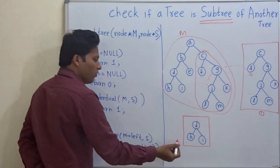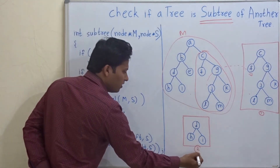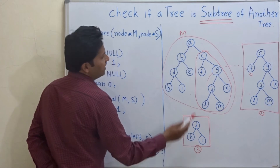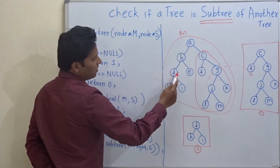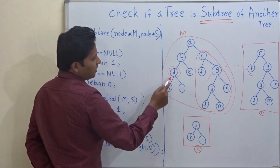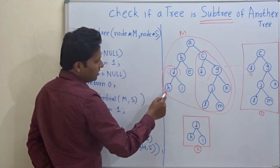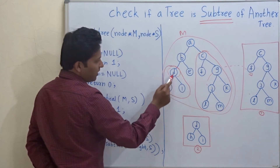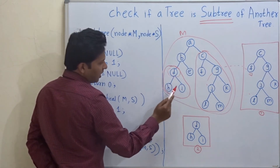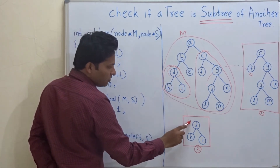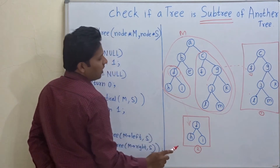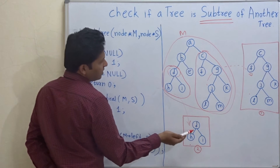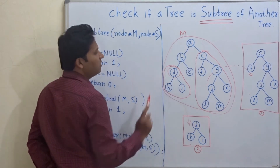Similarly, for this tree, I will name it as tree 2. So D, H, I — check where is D? Yes, D is here. Then the tree rooted at D, the subtree rooted at D with nodes D, H, I, is identical to this tree. And so tree 2 is a subtree of this main tree.